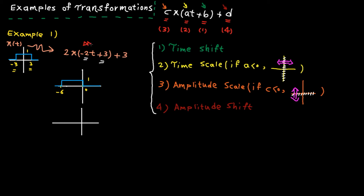We compress the signal by a factor of two, so minus six on the time axis goes to minus three, and zero doesn't change — zero divided by two is still zero. Here is the scaled signal. Note that the time scaling factor is negative in this example.